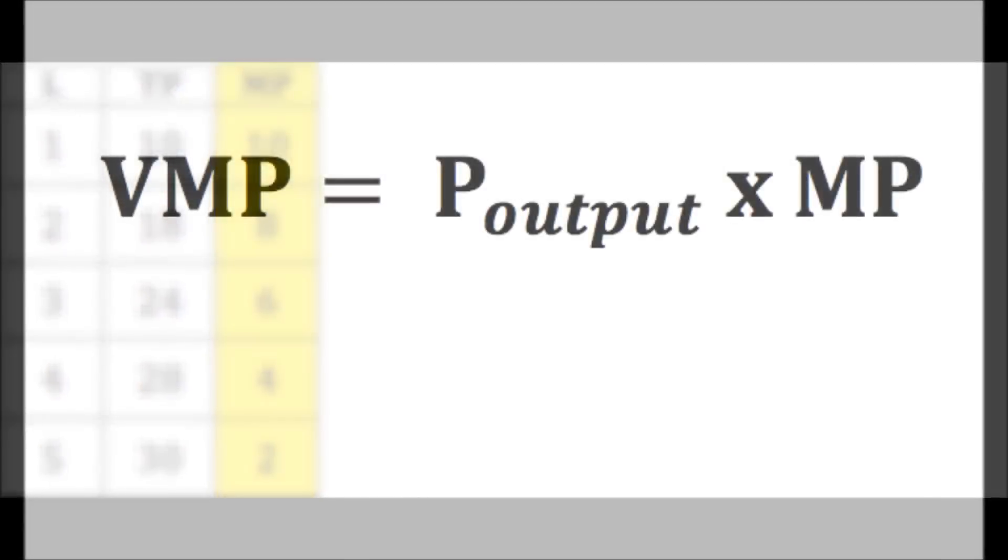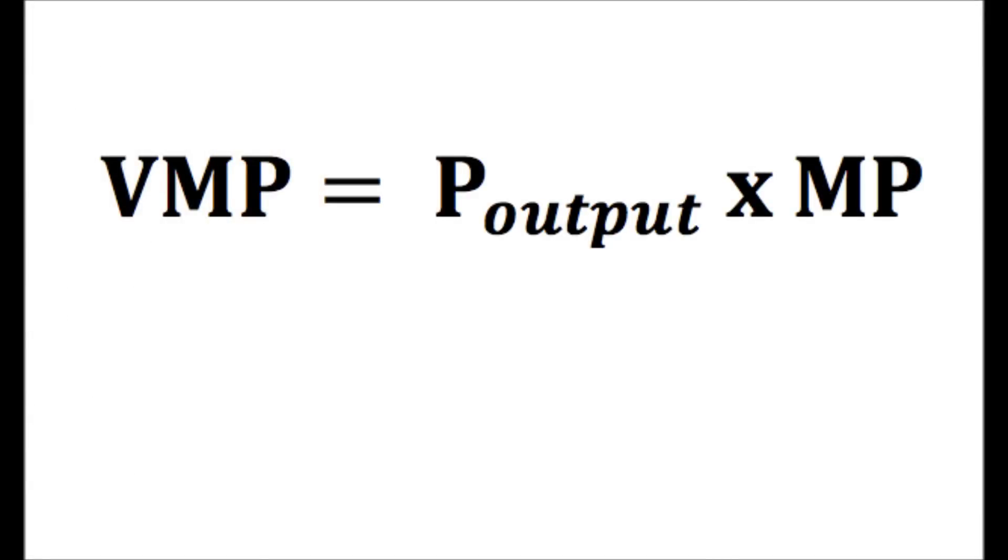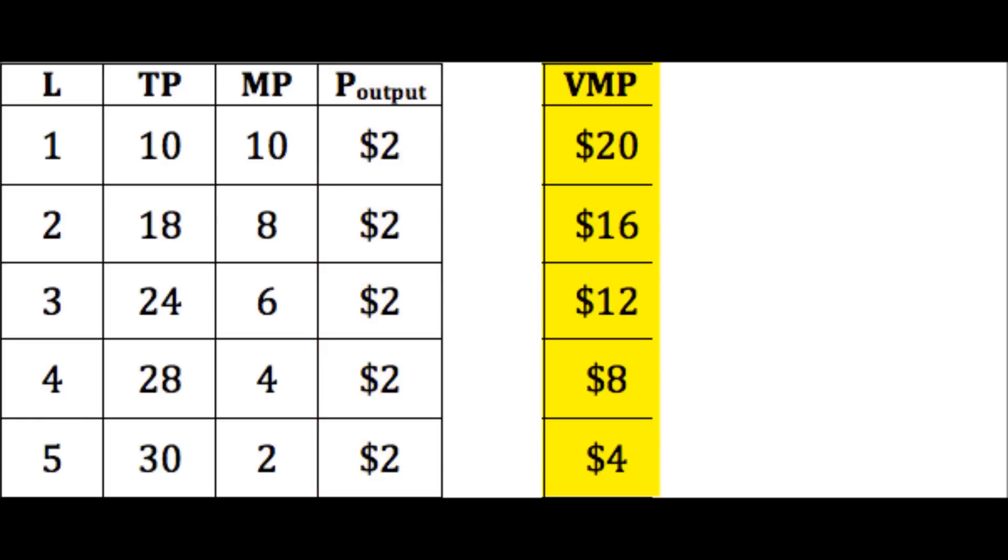Once we knew marginal product, we were able to establish the market value of that marginal product by taking the marginal product times the price. If the market determined price of the output is constant, this is a competitive product market, at, say, $2, then we can easily calculate the value of the marginal product by taking price of the output times the marginal product.